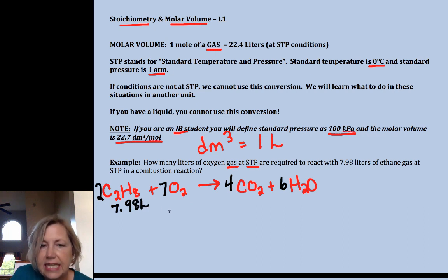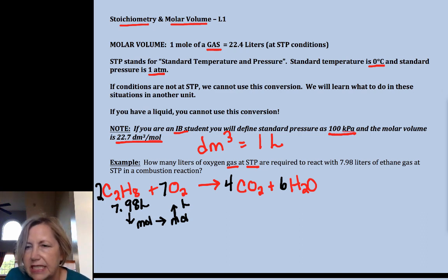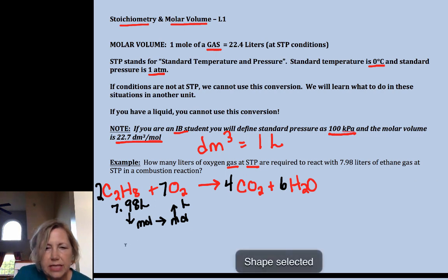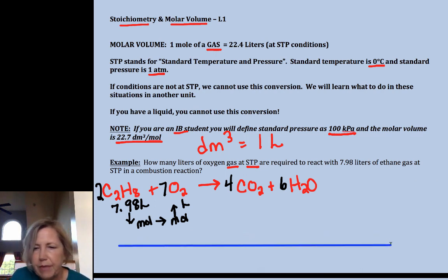We have 7.98 liters, it's a gas, it's at STP, and we want to go from liters to moles, and it says how many liters of oxygen at STP, moles to moles, and then moles to liters. Both of these are gases and both of these are at STP. Now let's make our grid if you like the grid method.